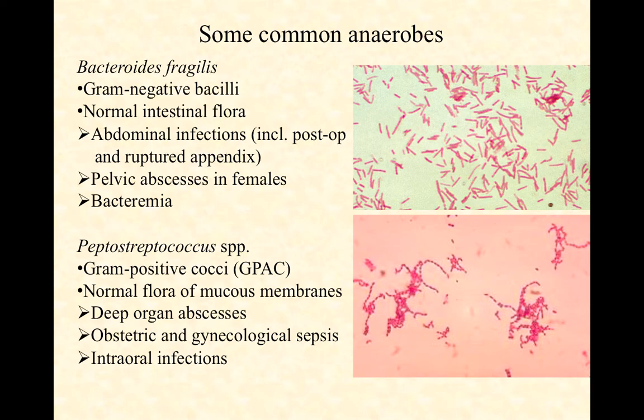A couple of examples of common anaerobes are Bacteroides fragilis and Peptostreptococcus species. Bacteroides fragilis is a gram-negative bacillus — you can see it in the upper right corner. They are normally living in our intestines under normal healthy conditions. As long as they stay in our intestines, they're fine. It's when they get out of the intestines that they cause problems.